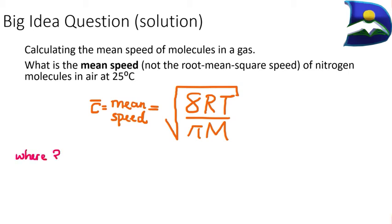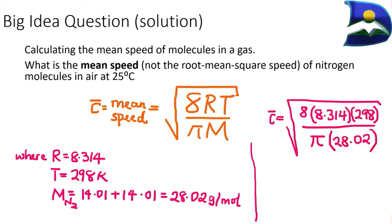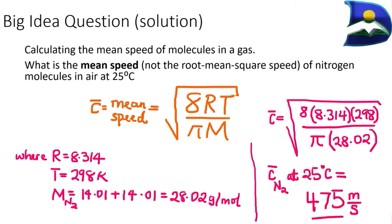Applying this expression to the question, we find the mean speed of nitrogen gas in air at 25 degrees Celsius. We use R = 8.314 J/(mol·K), T must be in Kelvin, and the molecular weight of N₂ is 28.02 g/mol — note that we add the atomic weight of nitrogen twice. Substituting these values into the mean speed equation gives us 475 meters per second.